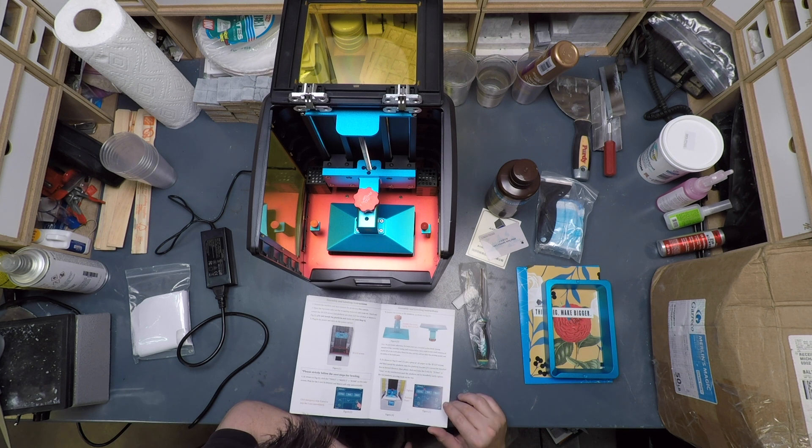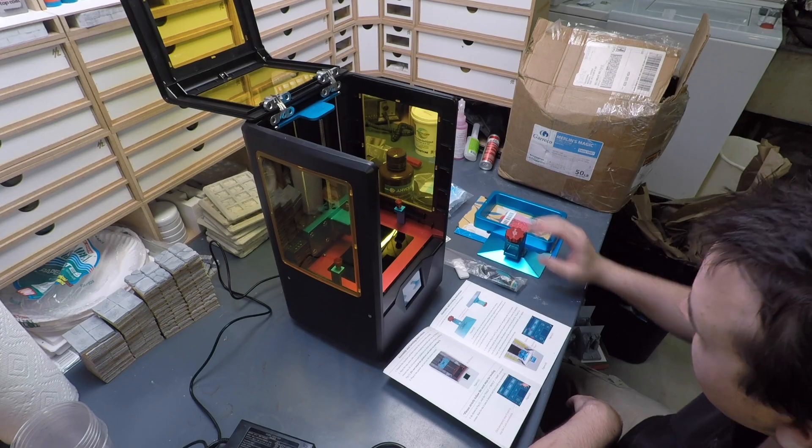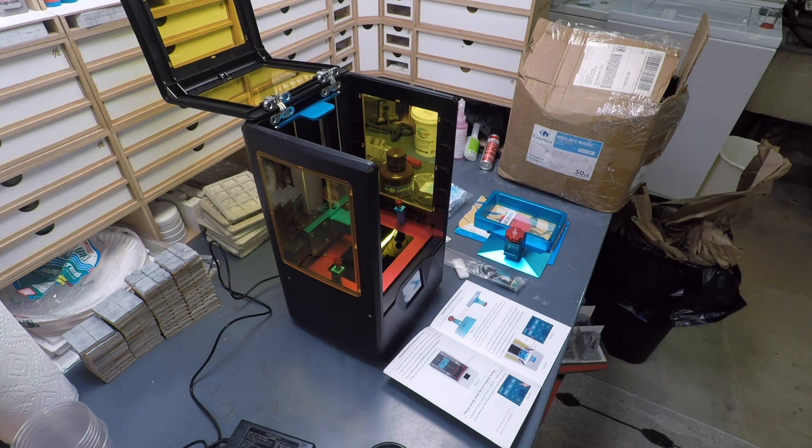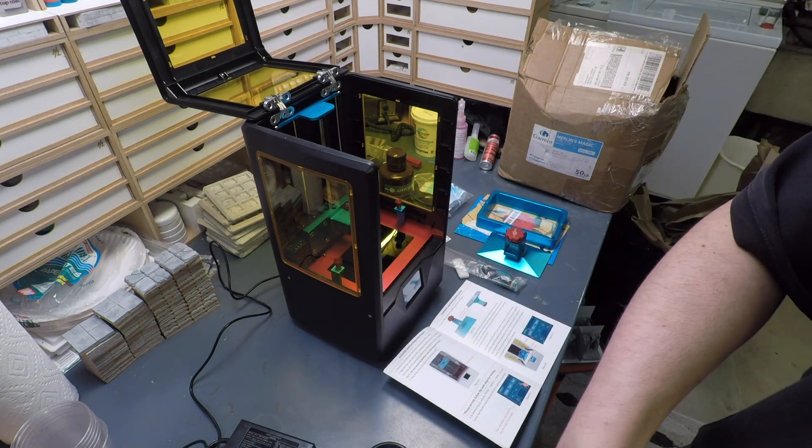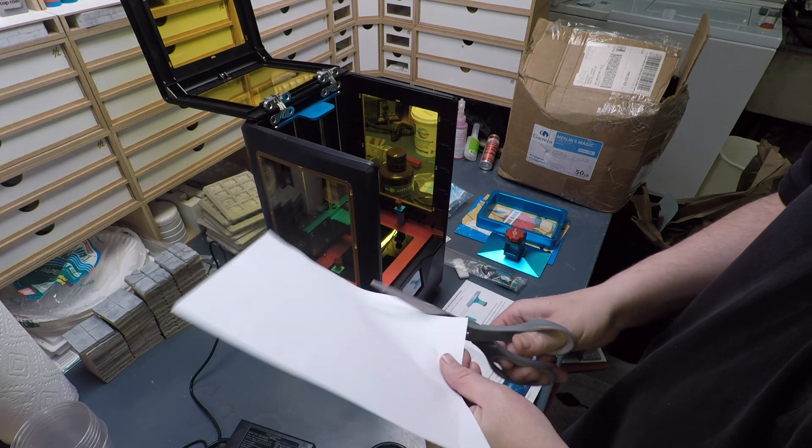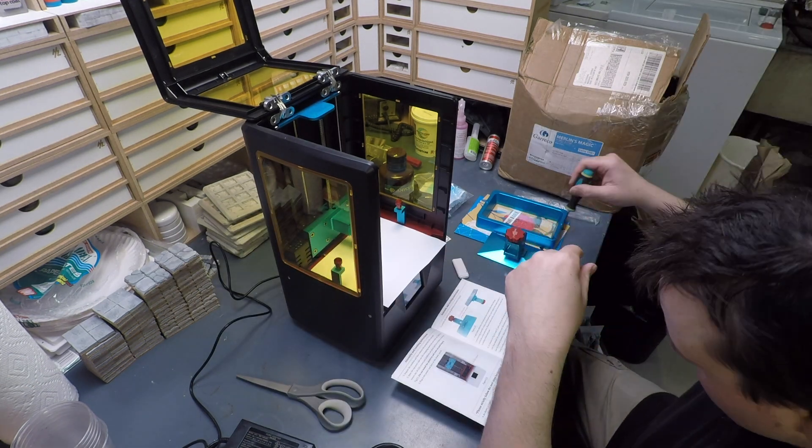And the way they tell you to do the leveling is to simply put a piece of paper under the build plate between that and the screen of the printer. And then you can level it.